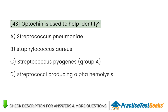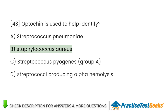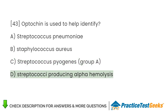Optochin is used to help identify: A. Streptococcus pneumoniae. B. Staphylococcus aureus. C. Streptococcus pyogenes Group A. D. Streptococci producing alpha hemolysis.